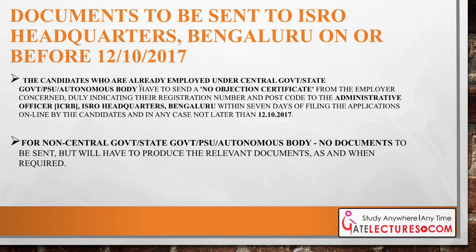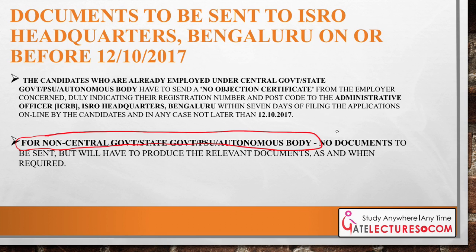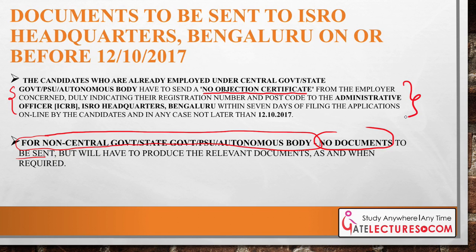Regarding documents, if you are a non-government or non-PSU employee, no physical documents need to be sent at the time of application. However, you must produce these documents when requested later. Candidates who are already working in government organizations must obtain a No Objection Certificate from their department and send it to ISRO. All further details are available on the ISRO website.